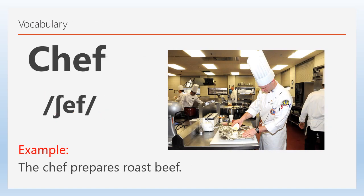The next vocabulary word is chef. Notice the 'ch' sound in phonetics is like a long S — 'shh,' like when you ask for silence. Then comes the 'f' sound. So when read together, it sounds like 'chef.' Example: 'The chef prepares roast beef.' Practice at home until you can pronounce it correctly. Make the long 'shh' sound first, then add the 'f': chef.